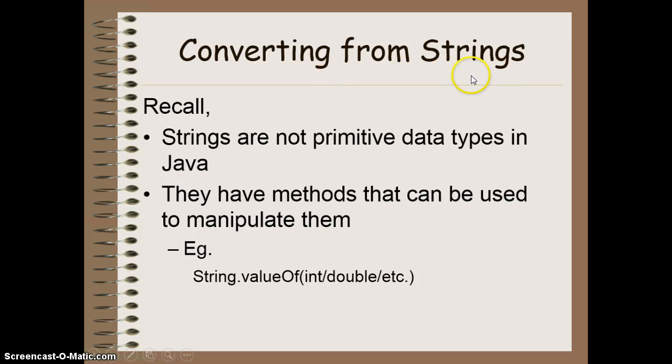Now the last thing we might want to convert to is strings here. Remember, strings are not primitive data types. They are objects. So they do have methods that we can use to manipulate them. This makes it very easy to get the string value of a particular variable type. So I can use the string.valueof and then provide a piece of information. Some sort of integer, some sort of double, some sort of char, whatever, and it will return the string value of whatever that is.